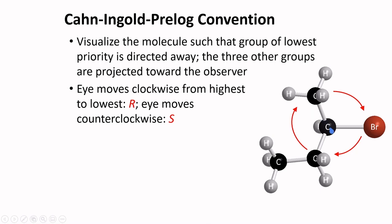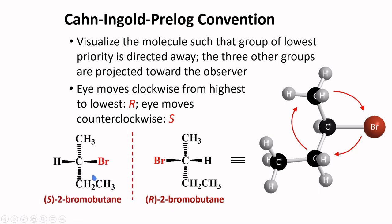If the eye moves counterclockwise, the chirality center is designated as S. Hence, this molecule, represented by this structure, can be named as R-2-bromobutane. Its mirror image is S-2-bromobutane.